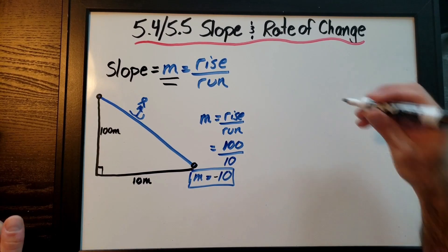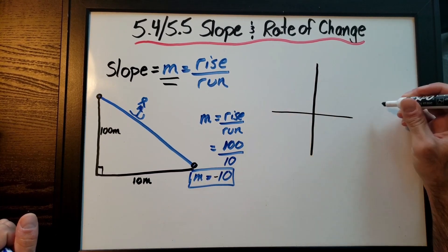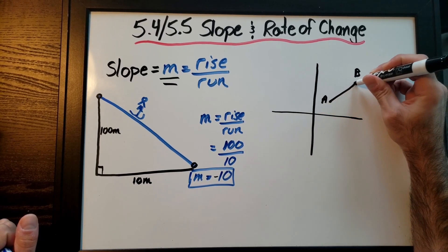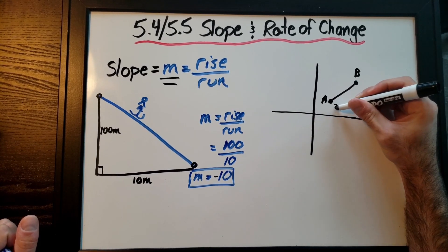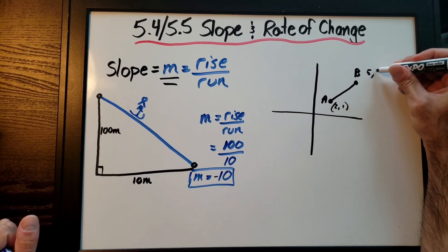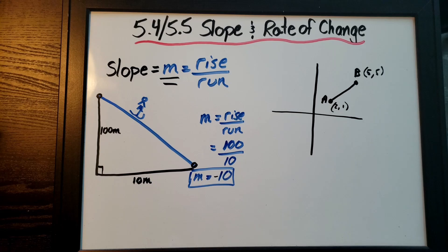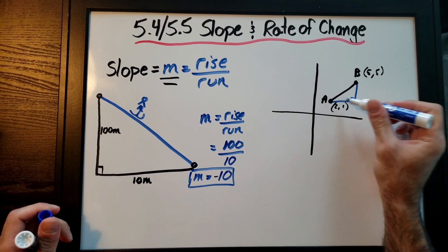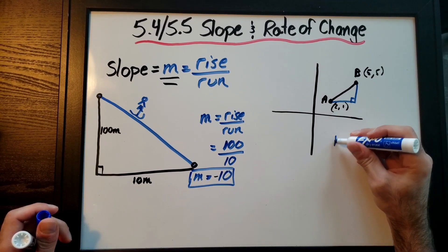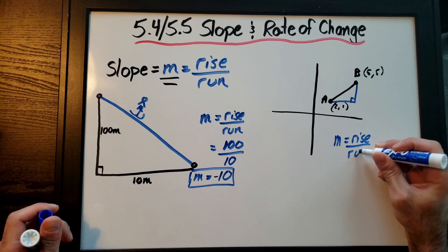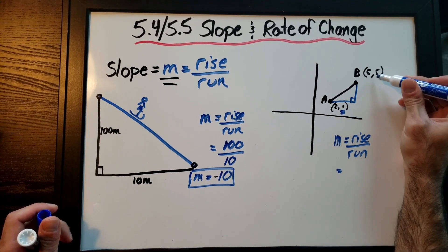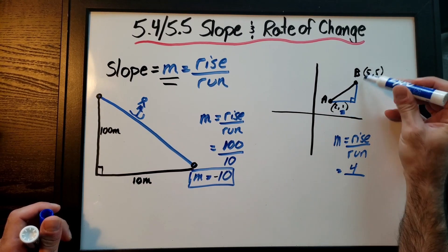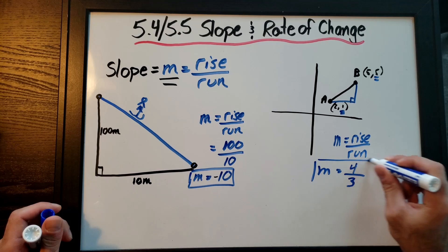On a coordinate plane, if we want to find the slope between point A at (2, 1) and point B at (5, 5), we create a triangle connecting the two points. Then we ask: how much is it going over, and how much is it going up? M equals rise over run. Looking at the y-values, it rises from 1 to 5, so the rise is 4.